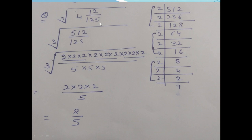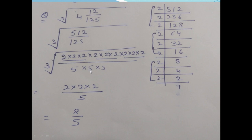Now find the cube root of a mixed number. First, change the mixed number into an improper fraction: multiply 125 by 4, then add 12, to get 512 over 125. Find the prime factors of 512 and 125. Make groups of 3 same numbers: take 2 from the group for 512 and 5 from the group for 125. Multiply to get 8 over 5. Convert back: your answer is 1 and 3 over 5.